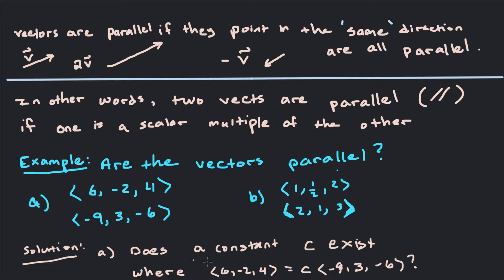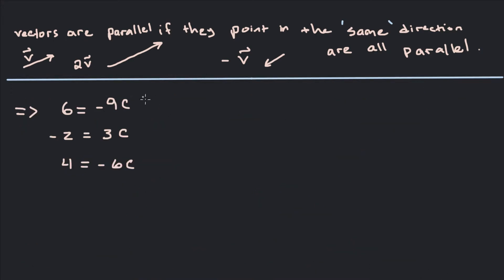So let's equate the first component 6 with negative 9 times C. The second component negative 2 should be equal to 3 times C and the third component 4 should be equal to negative 6 times C because when you multiply a vector by a constant you just multiply each component by that constant. We've just set up the equations that we talked about.